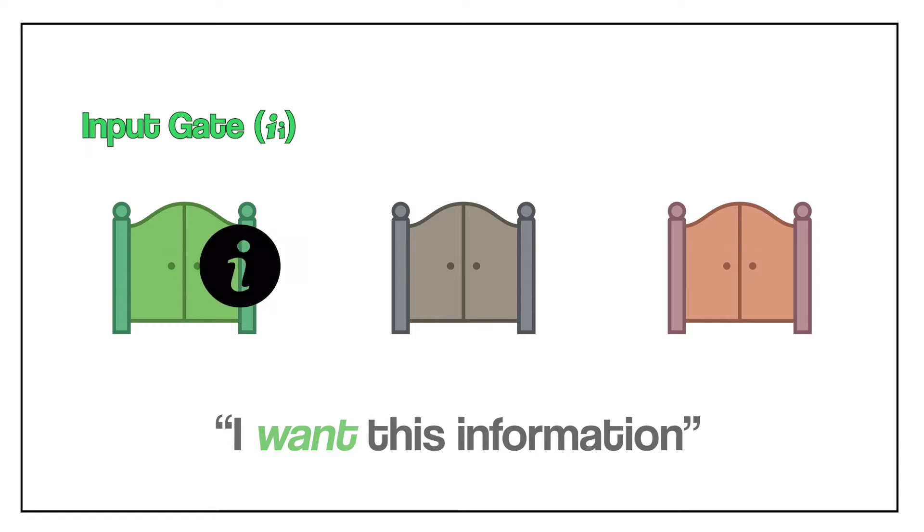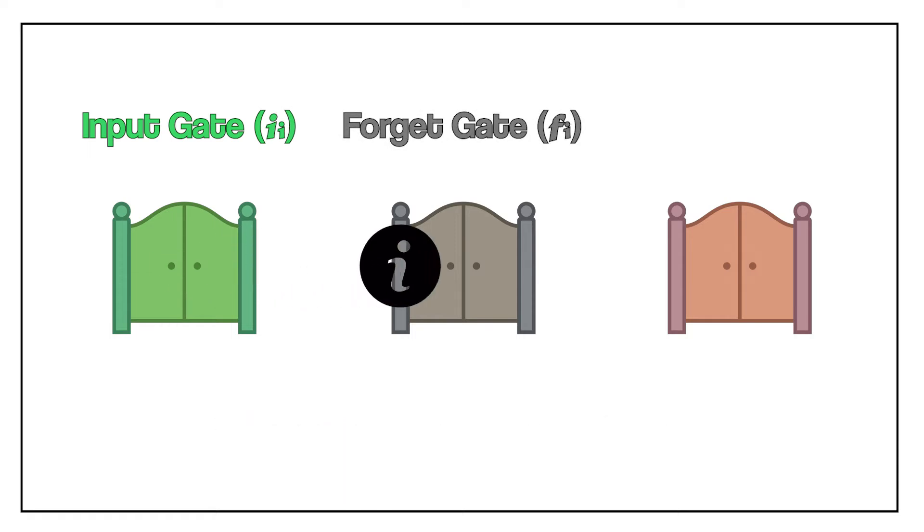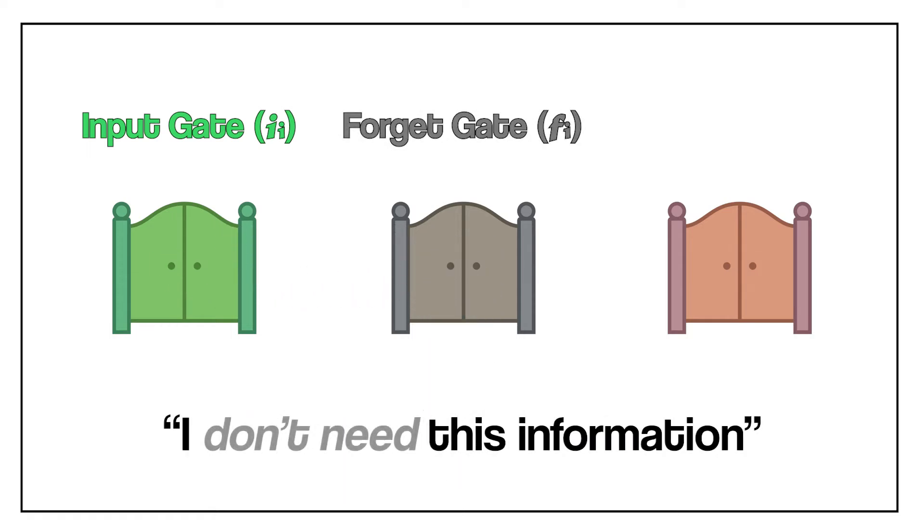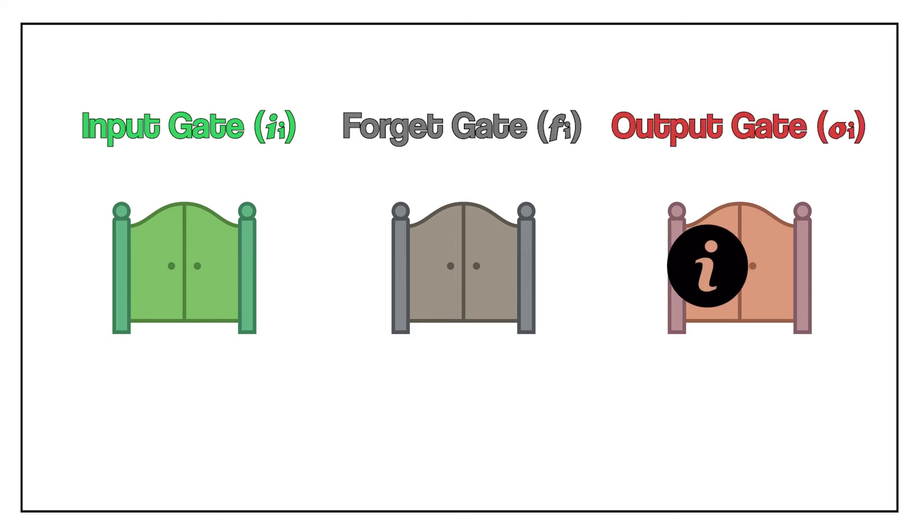The forget gate is used to delete the information, and lastly, the output gate chooses to forward the information or not.